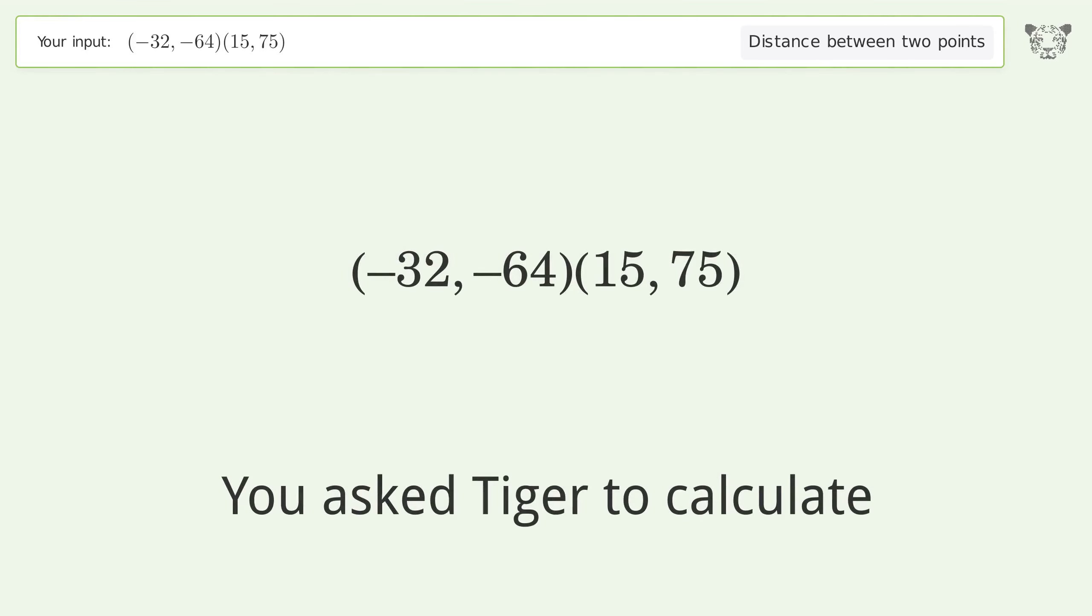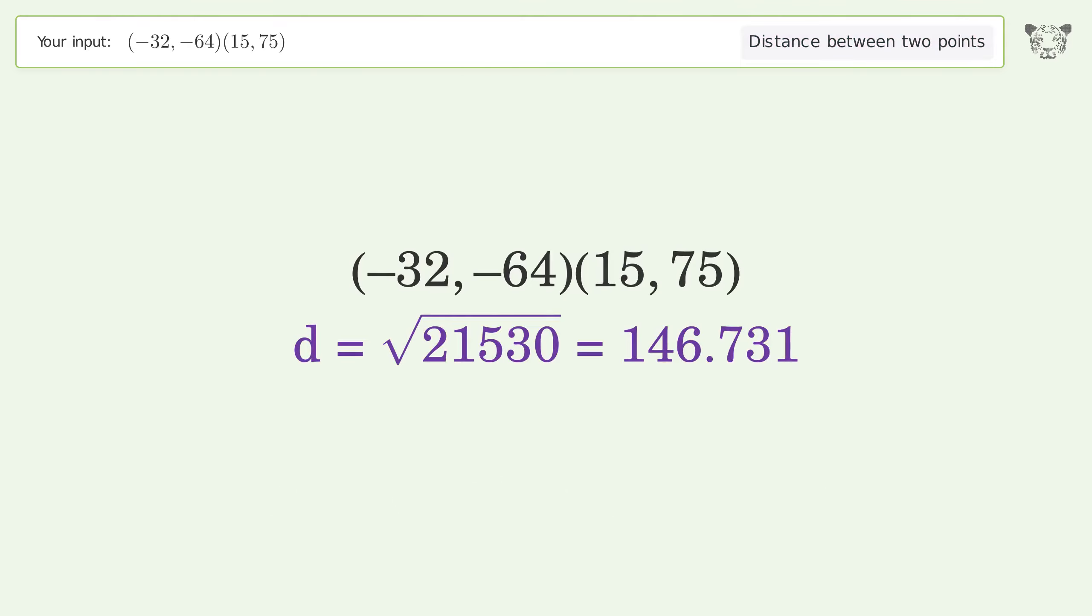You asked Tiger to calculate the distance between two points. The distance between the two points is the square root of 21,530, or 146.731.